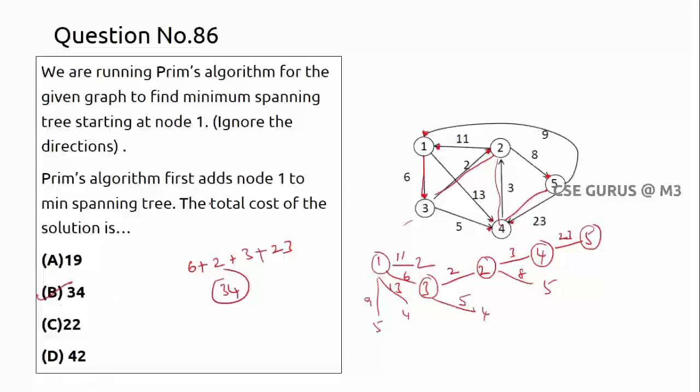Adding up all costs: 6 + 2 + 3 + 23 = 34. So the answer is 34, which is option B.